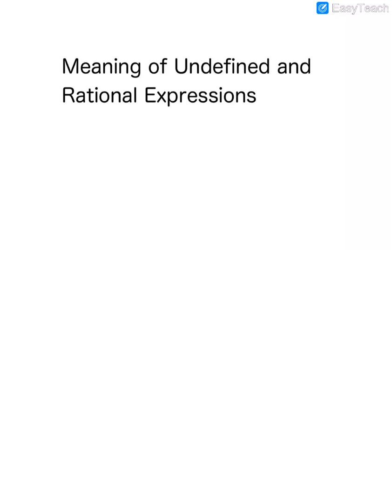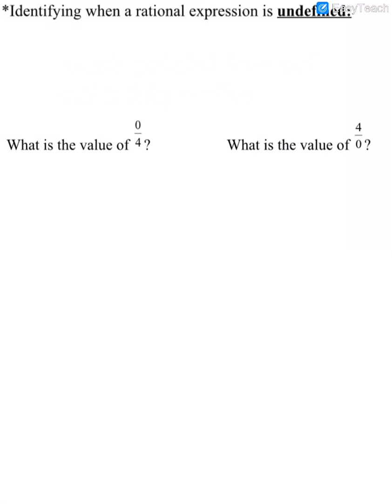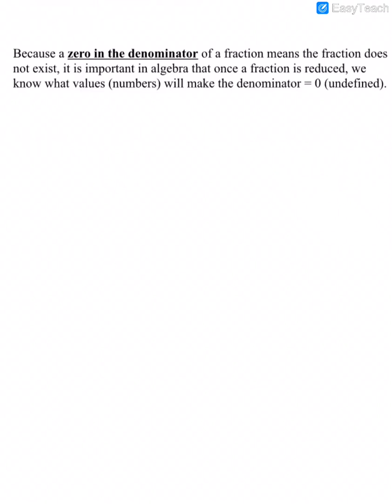Meaning of Undefined and Rational Expressions. To identify when a rational expression is undefined, let's look at these examples. What is the value of 0 over 4? Whenever we have a 0 in the numerator of a fraction, the value of that fraction is 0. What is the value of 4 over 0? If we have a 0 in the denominator, that causes the fraction to be undefined. Because a 0 in the denominator means the fraction does not exist, it's important in algebra that once a fraction is reduced, we know what values will make the denominator 0.